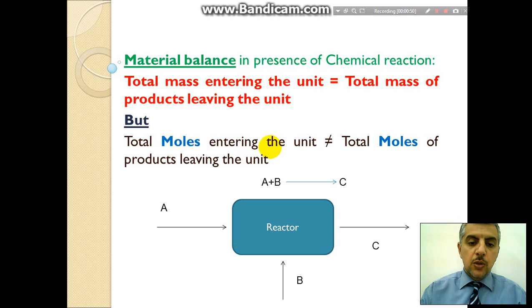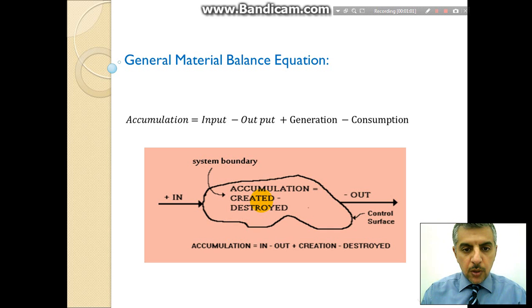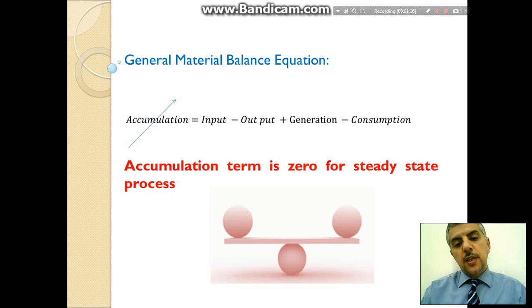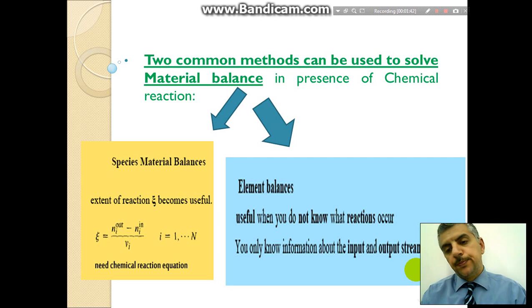Therefore, a general material balance equation shows that accumulation within the system equals input to the system minus output from the system, plus generation minus consumption. For a steady-state process, the accumulation term can be neglected and set to zero. While in the absence of chemical reaction, the generation minus consumption terms are also neglected, and the equation simplifies to: input equals output.